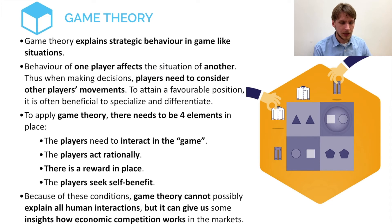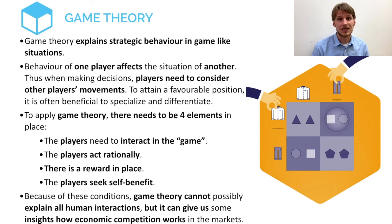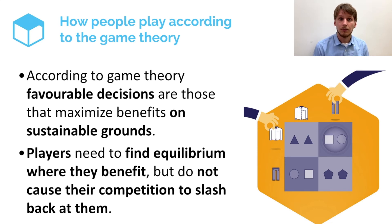Our next module is about the behavior of different firms and people in the market, which we explain using game theory. Game theory is a simplification of different market behaviors and cannot be applied in all situations. But game theory can explain some strategic, rational, self-benefit-seeking and materially rewarding behavior in the market. Game theory is about players — knowingly or unknowingly — interacting with each other, where one's actions affect the others.